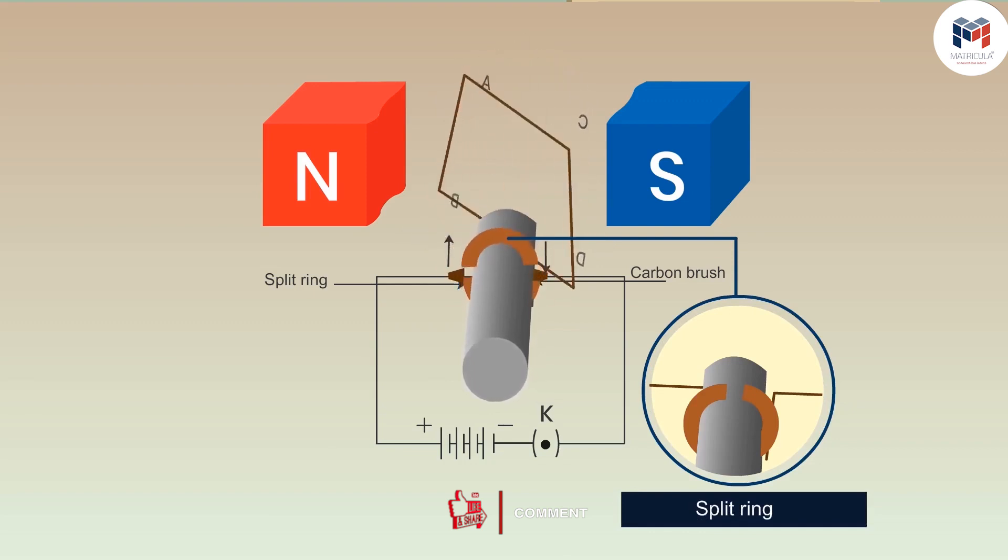No, both of them keep rotating in one direction only. Then what exactly are we missing in the motor to keep it rotating in one direction only? Split ring. Split ring is introduced in the system to keep the rotation in one direction only.